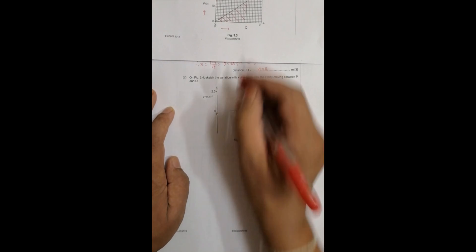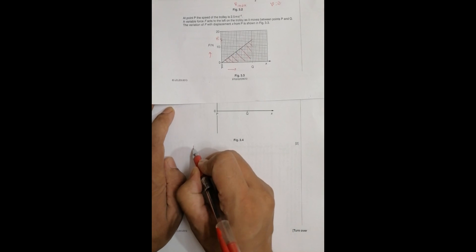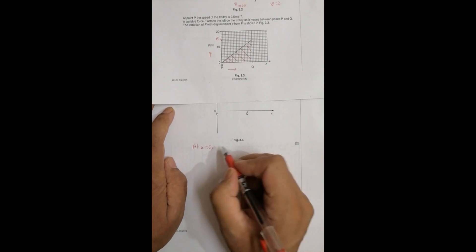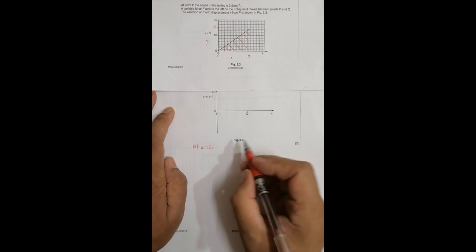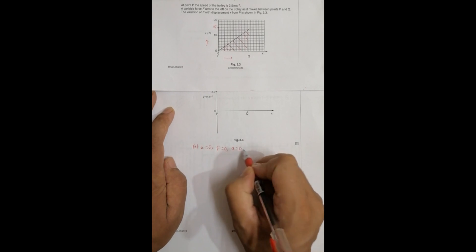We know that in the beginning, in the very beginning, F equals 0. So at x equals 0, I have got F is equal to 0, which means a is equal to 0.